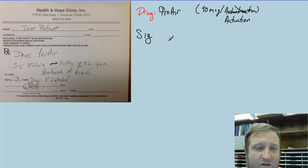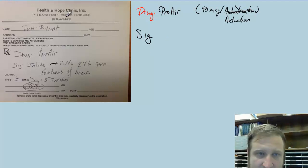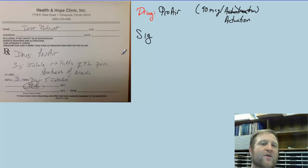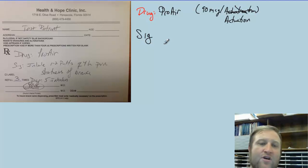So now we're going to look at the SIG. The SIG here is going to be: take one to two puffs Q4H PRN shortness of breath.